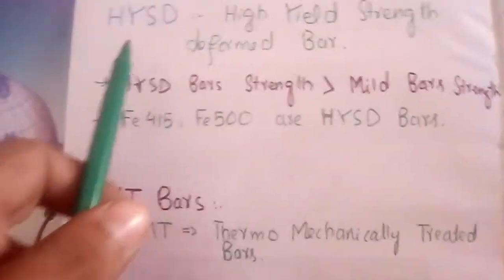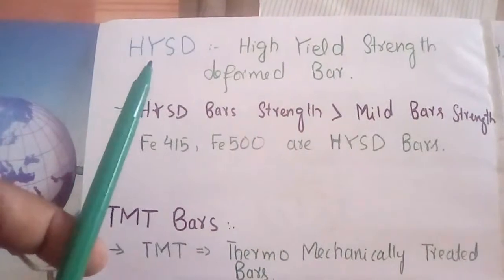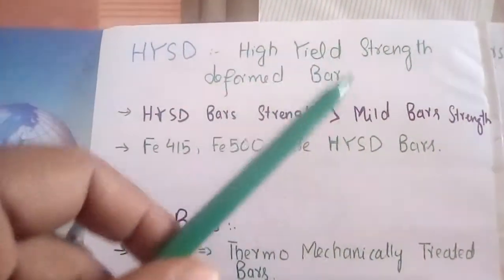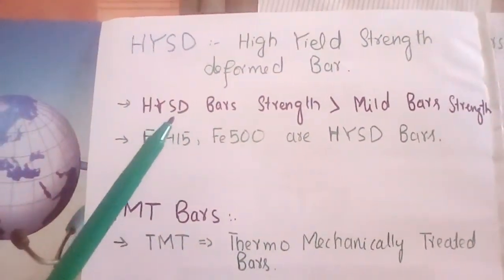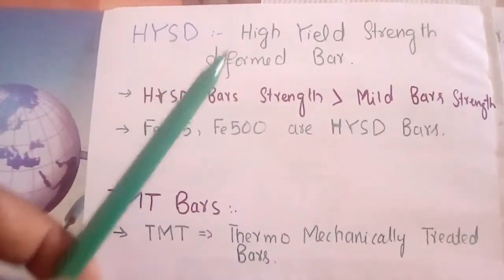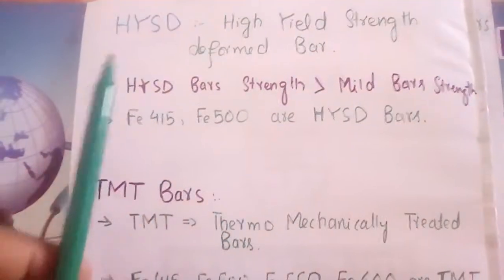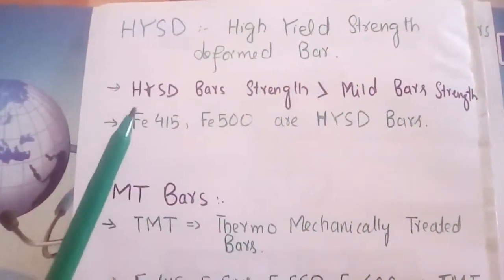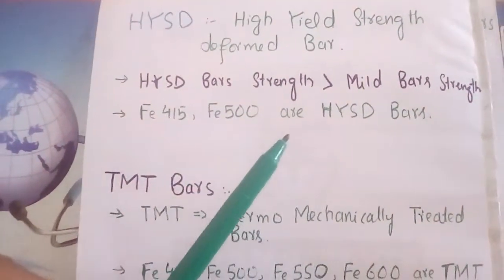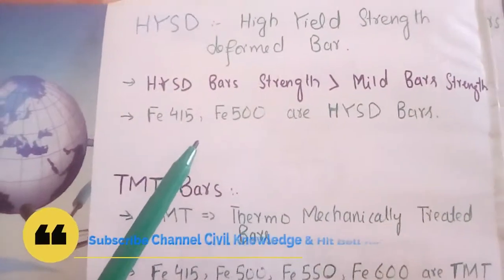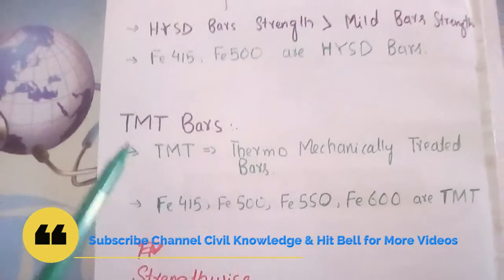Our next topic is HYSD. HYSD means high yield strength deformed bar. It is the abbreviation for high yield strength deformed bar, and the strength of HYSD bars is more than mild bar. The grades of high yield strength deformed bar are Fe 415 and Fe 500.